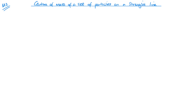Welcome to M2. Today we're looking at unit 3, centers of mass. In particular, in this video it's going to be the centers of mass of a set of particles on a straight line. This is really M1 on a straight line. It should be quite straightforward, but we'll get straight into it and then look at some examples.